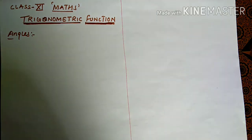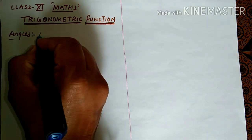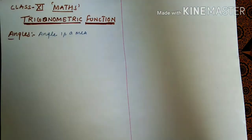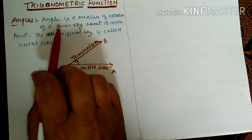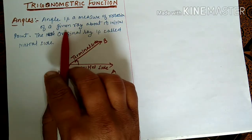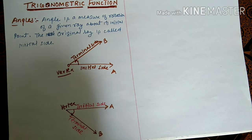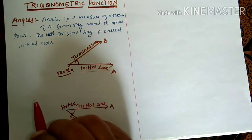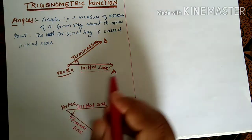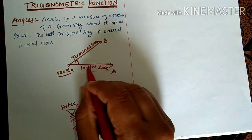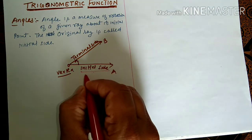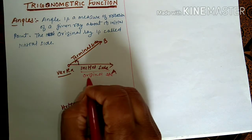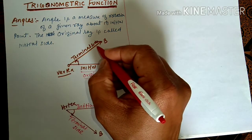Angle you already know. Today we are going to define angle. The definition is: angle is the measure of rotation of a given ray about its initial point. The initial side is the side which remains stationary, also called the original side. The moving side is called the terminal side.